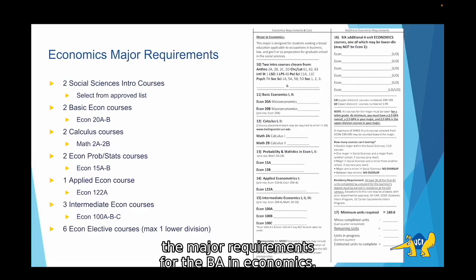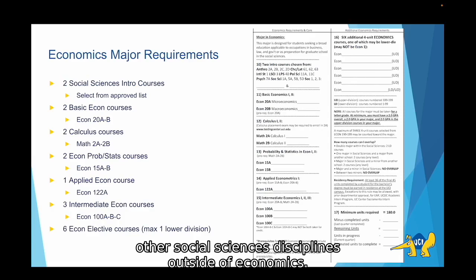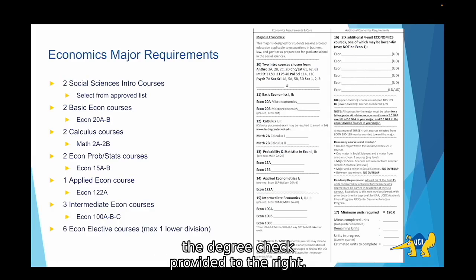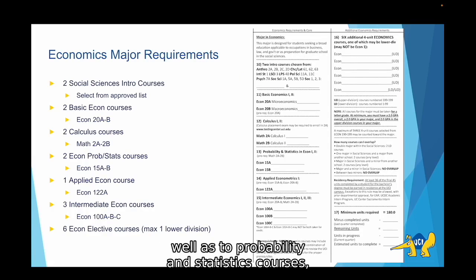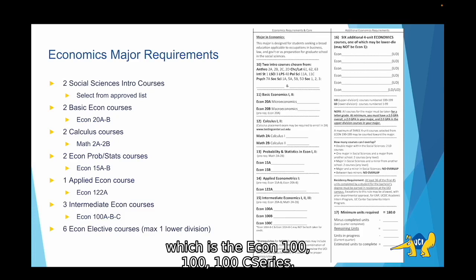Now we are going to go over the major requirements for the BA in Economics. To start with, you'll need to take two social sciences introductory courses from other social sciences disciplines outside of economics, such as classes in anthropology, language science, or sociology. The full list of classes that can count towards this requirement are listed on the degree check provided to the right, and you can also find the full list under Economics in the general catalog. You'll need to take two basic economics courses, Econ 20A and Econ 20B, as well as Math 2A and Math 2B, two probability and statistics courses (Econ 15A and 15B), one applied econometric course (Econ 122A), and three intermediate econ courses in the Econ 100A, 100B, and 100C series.